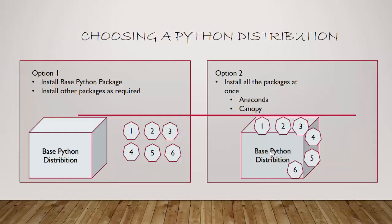So we've got two options. Option one is we install a base Python package and then we install the other packages as required. As you can see, I've got this cube which is the base Python distribution, and one through six are the packages we require, and we install them going forward as and when we need them.